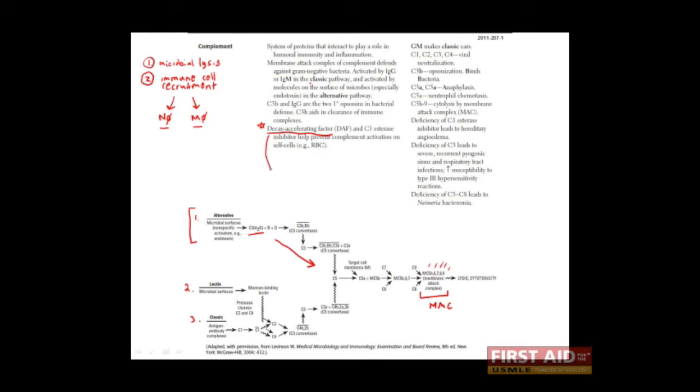You can imagine that if a person were deficient for the decay-accelerating factor, there may be some problems. And indeed, there is. People with a deficiency in DAF can be affected by a disease known as paroxysmal nocturnal hemoglobinuria. For some reason, this tends to occur more often at night. And so when a person wakes up in the morning and goes to urinate, they may find that their urine actually has a red hue because of all the red blood cell lysis and the hemoglobin that's entering into the urine.